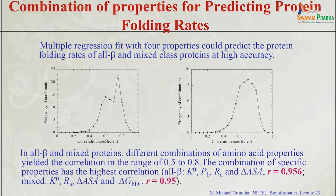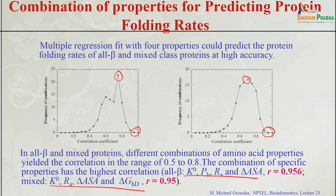To relate folding rates, we use a multiple regression technique combining different property values. When making combinations there are millions of possibilities. We evaluate different combinations and look at the frequency versus performance. Most combinations show low performance, but certain specific combinations show the highest performance — for example, for all-beta proteins, specific properties give the highest correlation, and similarly for mixture class proteins.